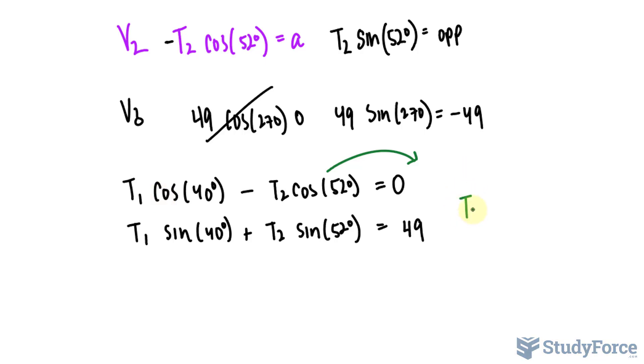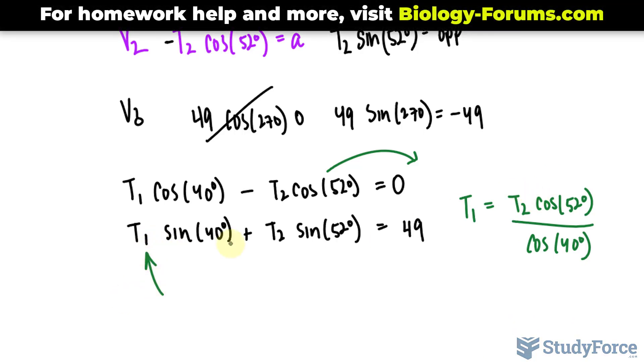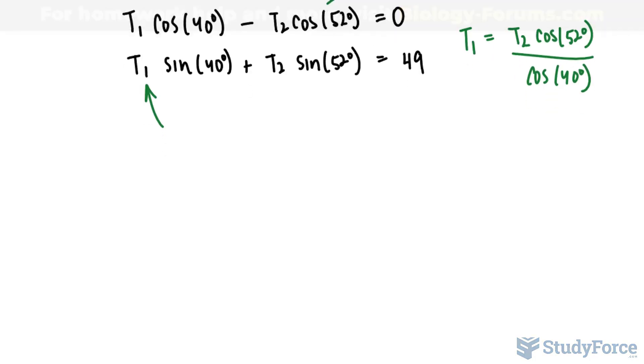So if I have T sub 1 isolated, it will look like this: T sub 2 cosine 52 degrees over cosine of 40 degrees. And I'll take this content and place it right into here. So equation 2 is exclusively in terms of T sub 2, which you can solve for algebraically.